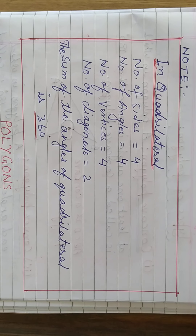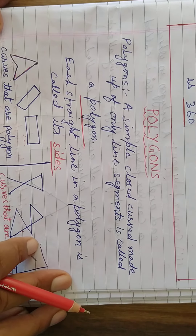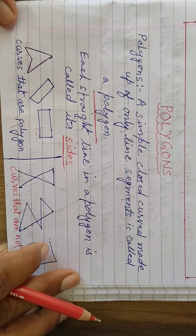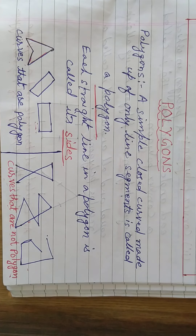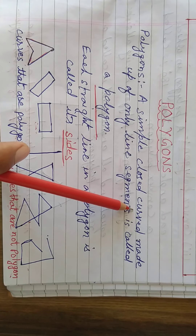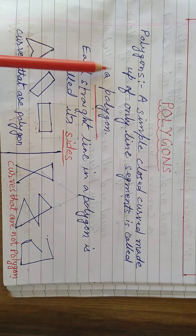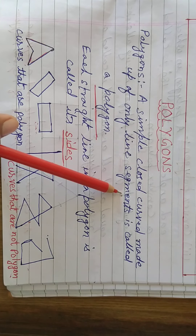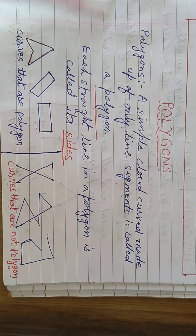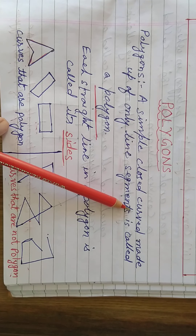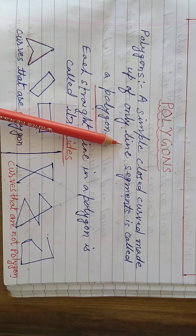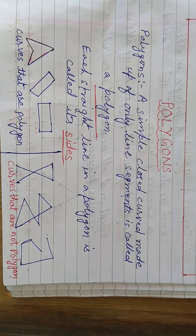Now, after that — polygon. What is a polygon? A simple closed curve made up of only line segments is called a polygon.